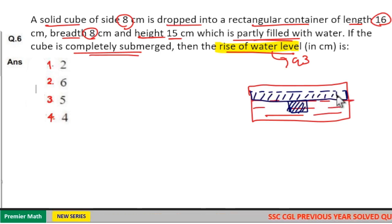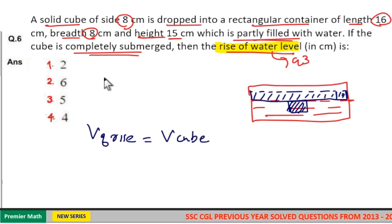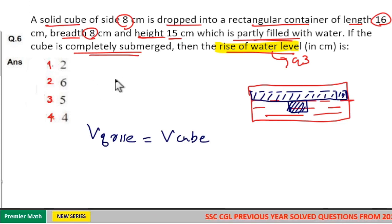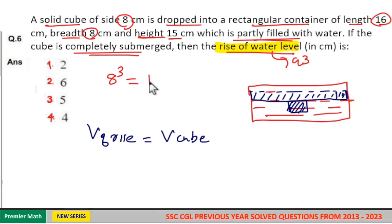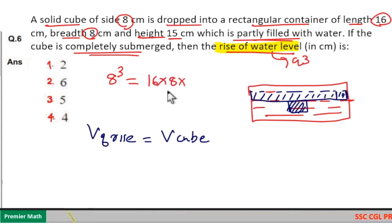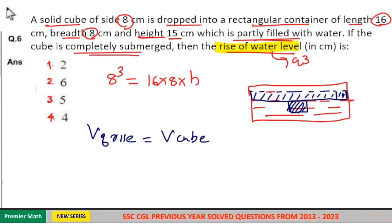This is the rise, and this is height h. The volume of the rise equals the volume of the cube. So, the cube volume equals a³, which equals the volume of the rectangular portion — that is, length 16 multiplied by breadth 8 multiplied by height h, where h is the water level rise we need to find.